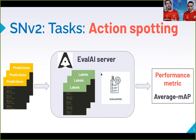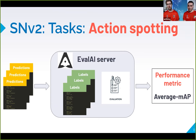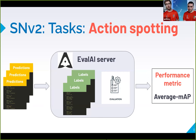Once you have your predictions, upload them to our EvalAI server, which stores the labels and an evaluation function. We compare your predictions with our labels and compute an average mAP (average mean average precision). You receive a score on the test set or the challenge set, depending on what you're submitting. Anthony will now demonstrate this.